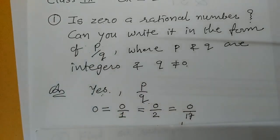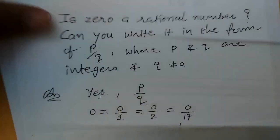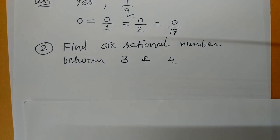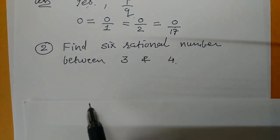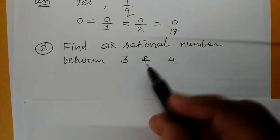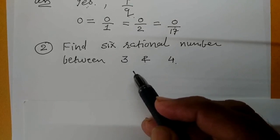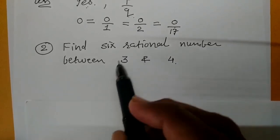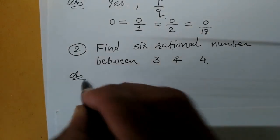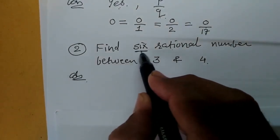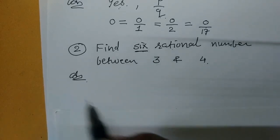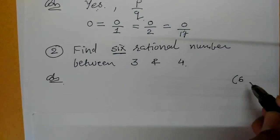Now let us take the second question. Find six rational numbers between three and four. Children, the answer is easy — you can write any numbers between three and four. The method: here the number given is six, so add one to this number.